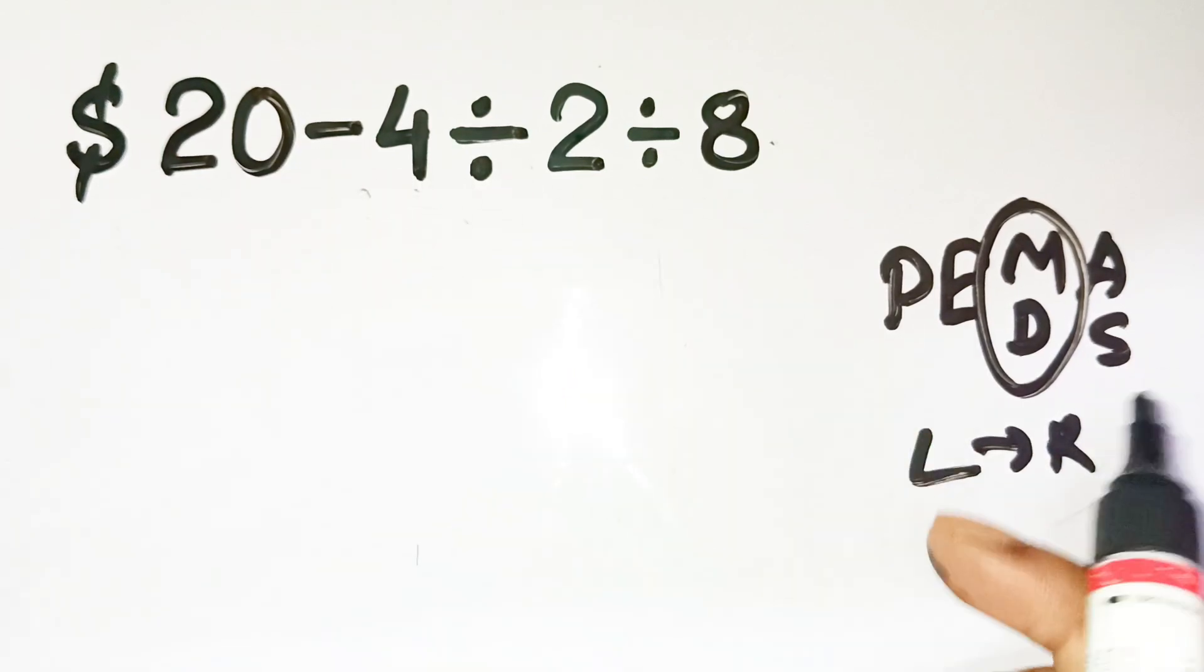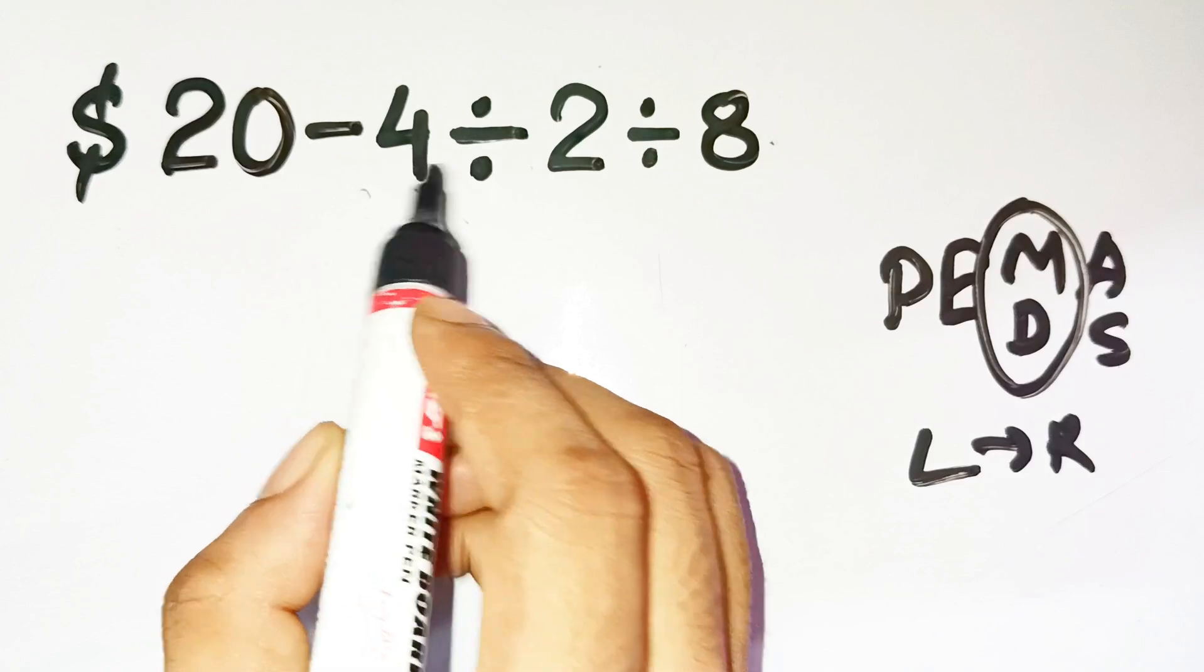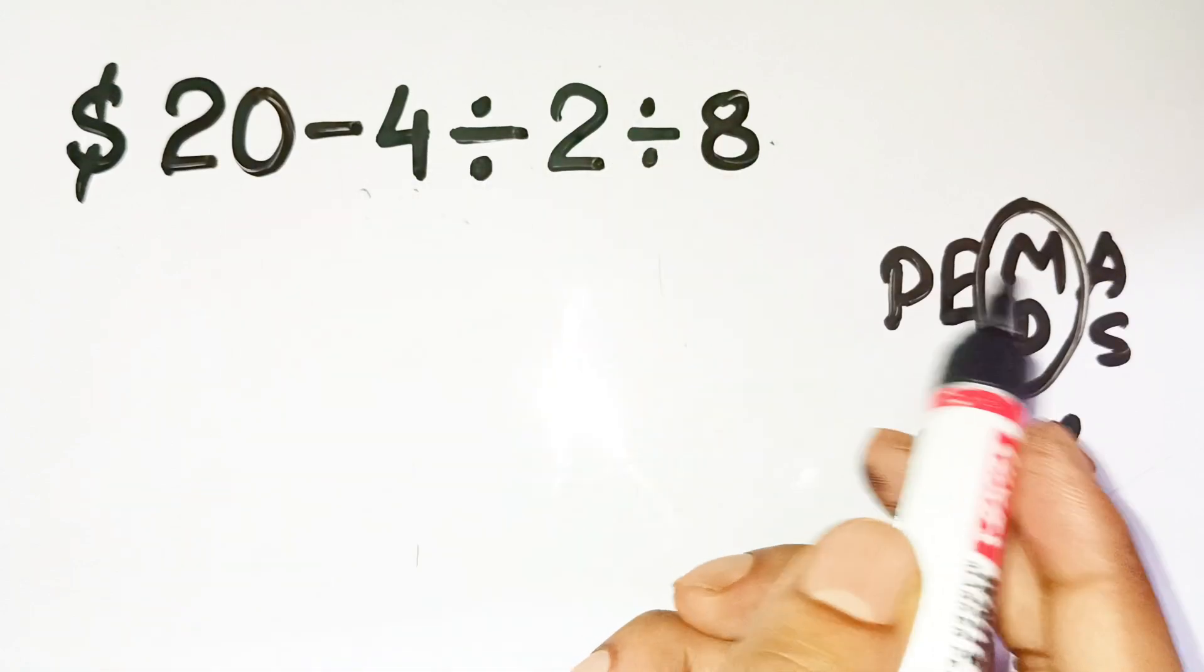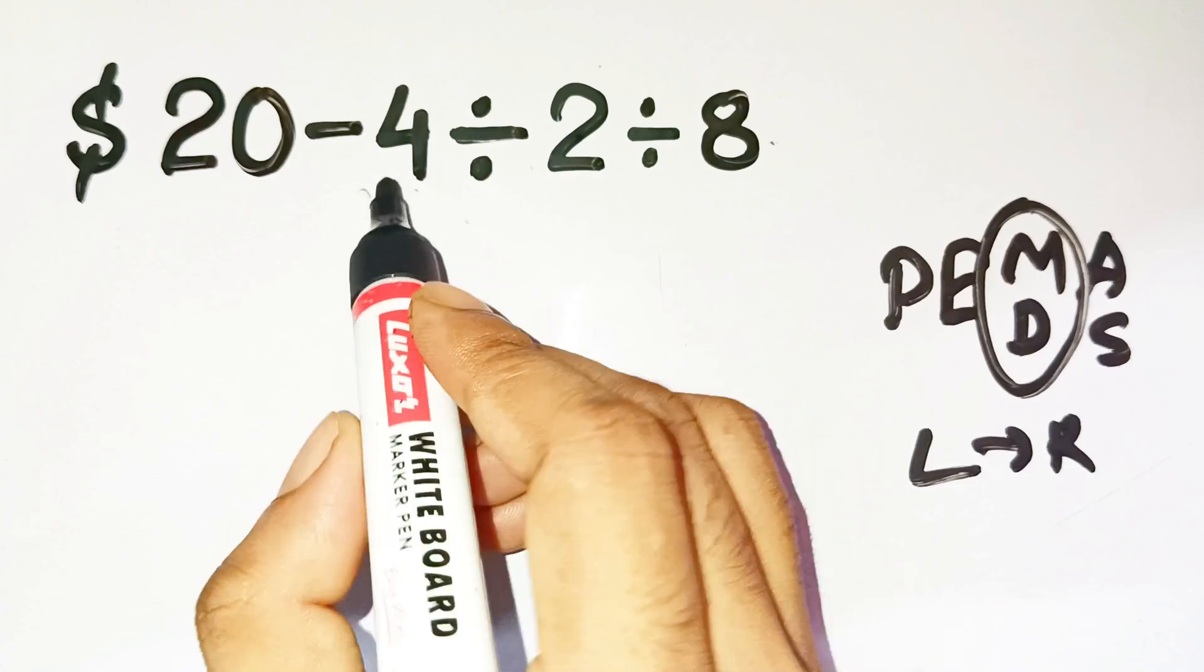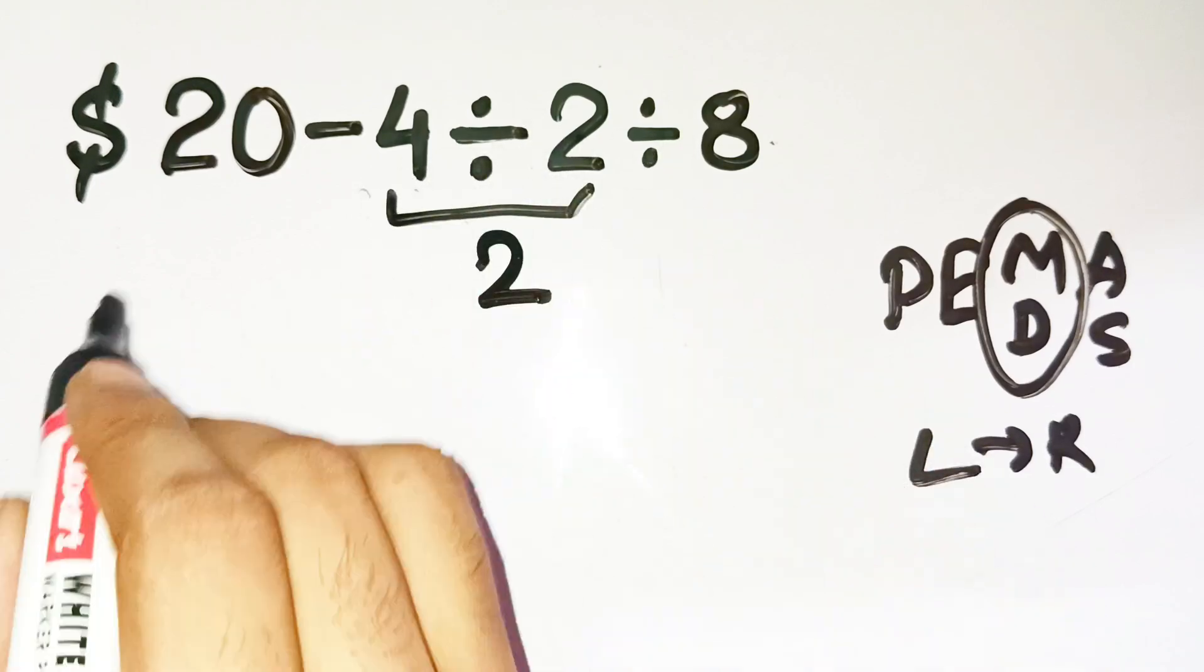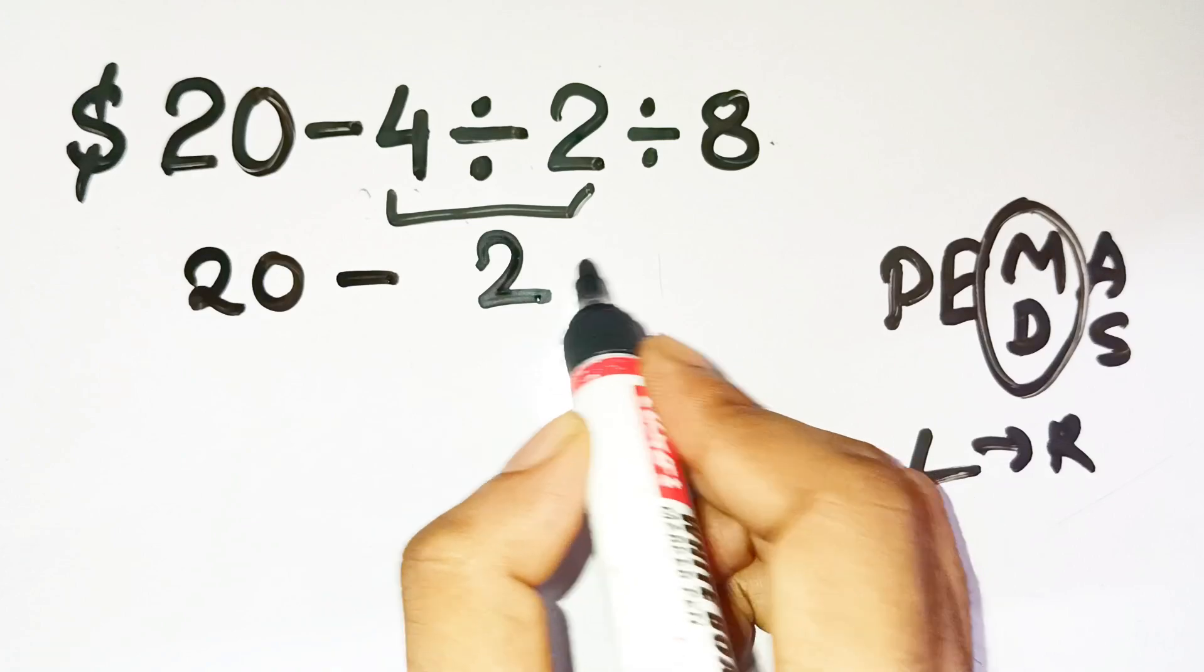All right, let's apply that. The expression is 20 minus 4 divided by 2 divided by 8. No parentheses, no exponents, so we move to division. Starting from the left, first we do 4 divided by 2, which equals 2. Now the expression becomes 20 minus 2 divided by 8.